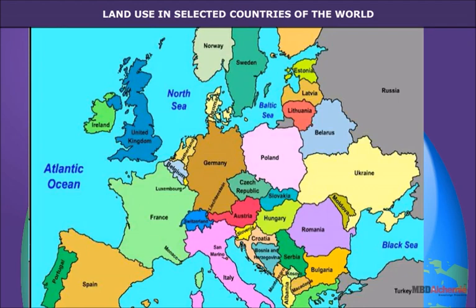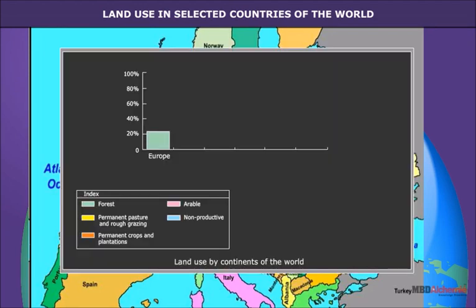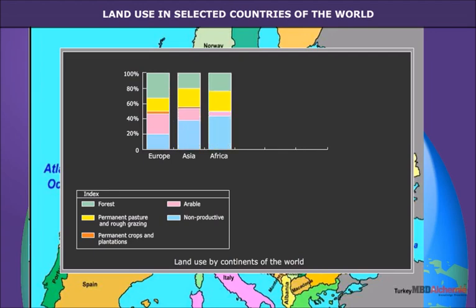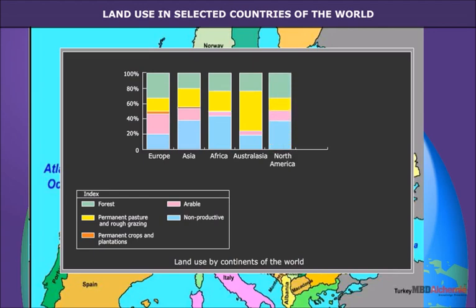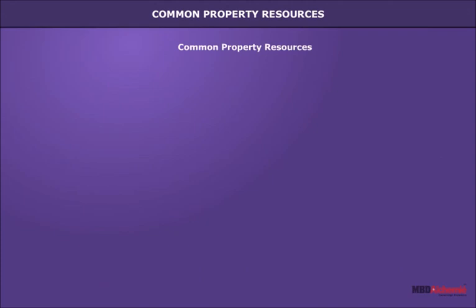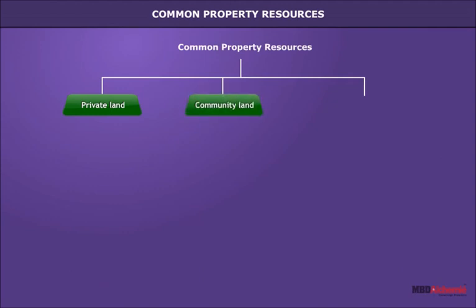Two European countries, France and UK, have a sizeable portion of arable land and agricultural occupations are still very important. On the basis of its use, land can be divided into private lands, community lands and cooperative ownership.